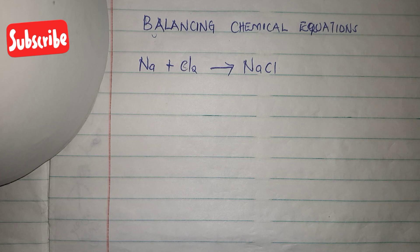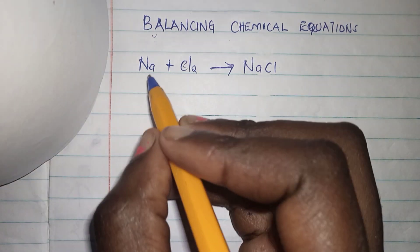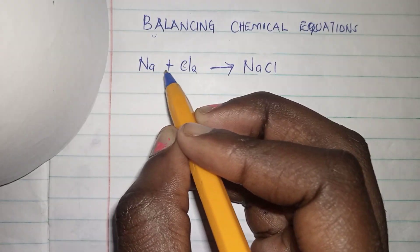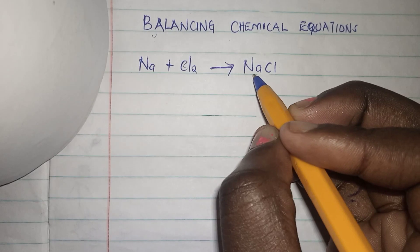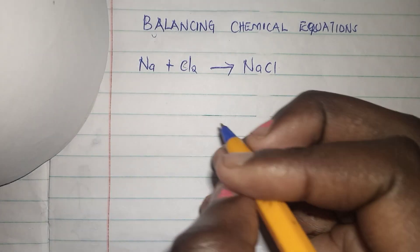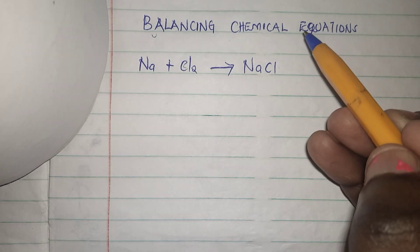Hello, welcome or welcome back to my YouTube channel. I want to take you today through balancing chemical equations. I have an equation here: sodium plus chlorine. When you react sodium plus chlorine, you get sodium chloride as the product.